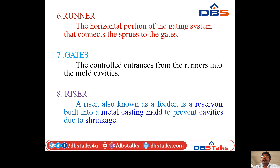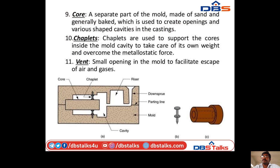Riser: a riser, also known as a feeder, is a reservoir built into the metal casting mold to prevent cavities due to shrinkage. Core: a separate part of the mold made of sand and generally baked, which is used to create openings and various shaped cavities in the casting. Chaplets: chaplets are made to support the core inside the mold cavity, to take care of its own weight and overcome metallostatic forces.